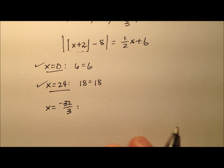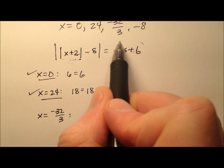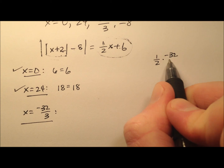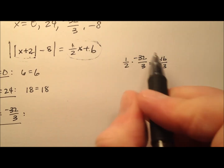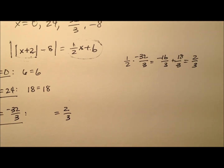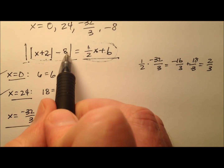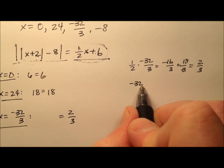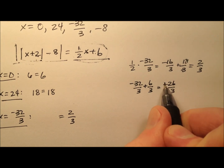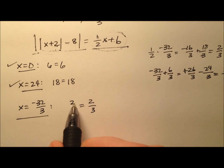Next, x equals negative 32 thirds. Let's do the right side first: one-half times negative 32 thirds equals negative 16 thirds, and adding 6 — which is 18 thirds — gives 2 thirds. The right side being positive means we proceed with the left side. Negative 32 thirds plus 2 (that's 6 thirds) gives negative 26 thirds; the absolute value is positive 26 thirds, minus 8 (24 thirds) gives 2 thirds. That works as well.